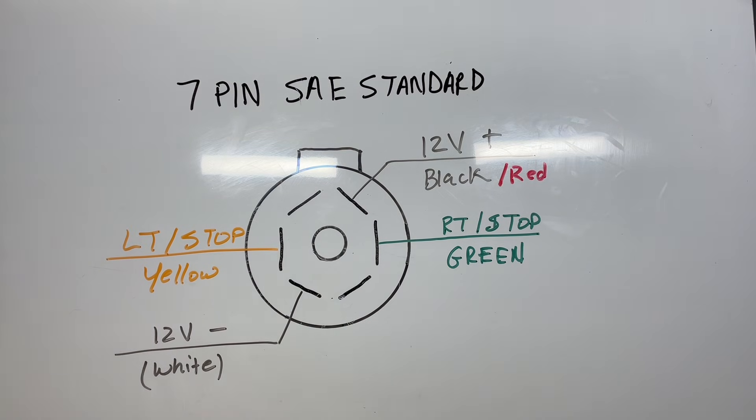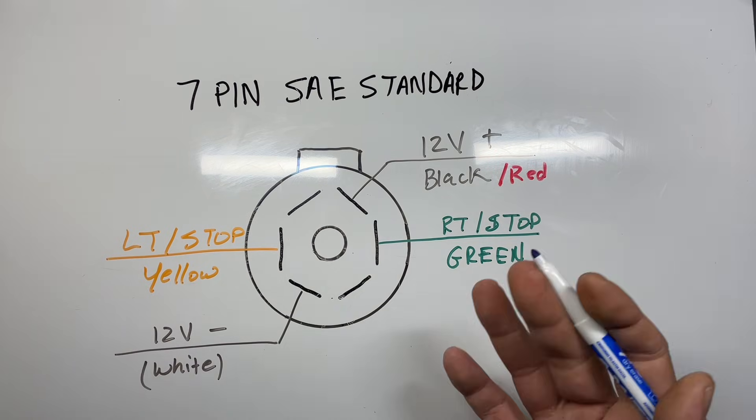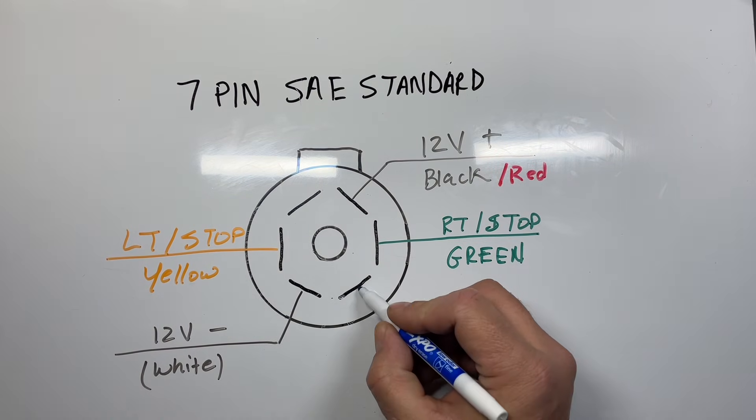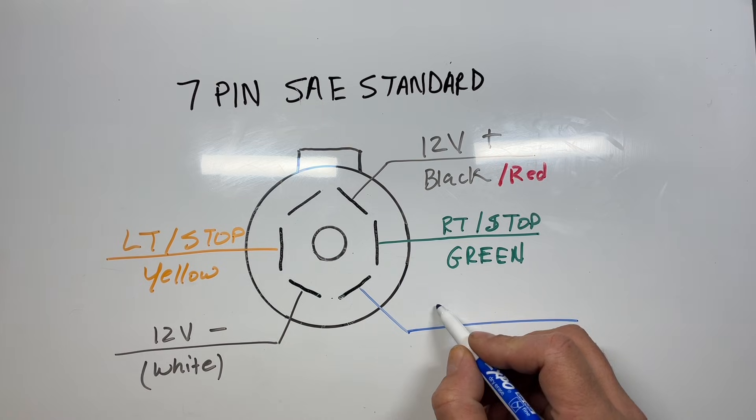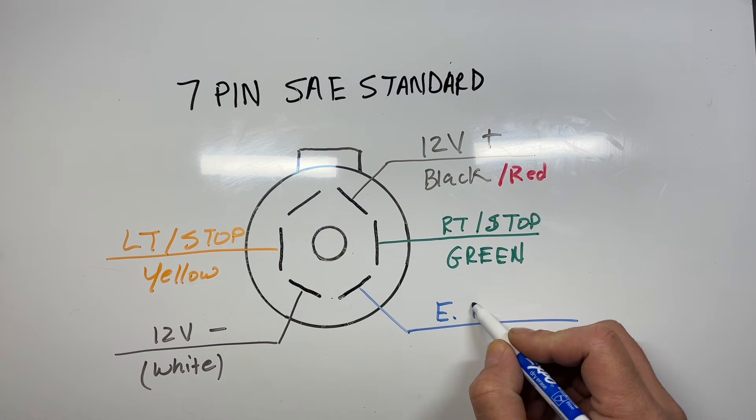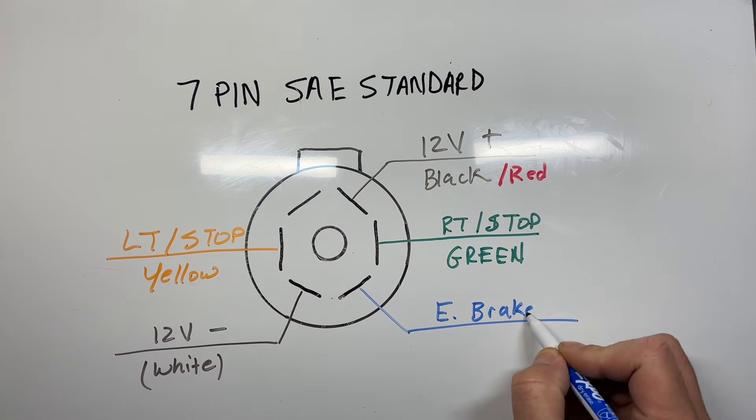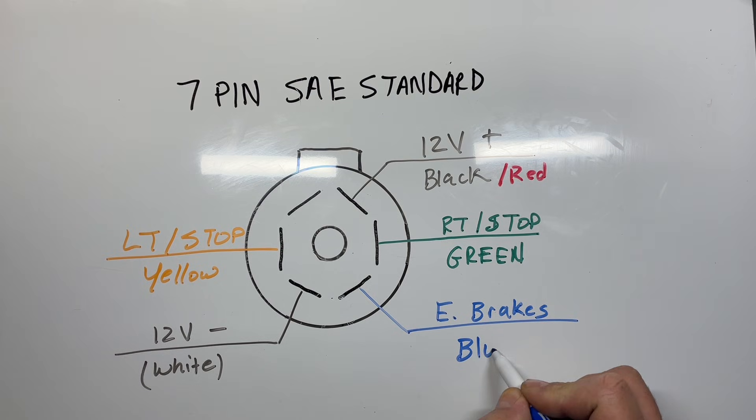We have blue, which is generally always your brake, no matter if you're in RV or SAE standard, and that's going to be located here. So this is your electric brakes, and that's generally always in blue.